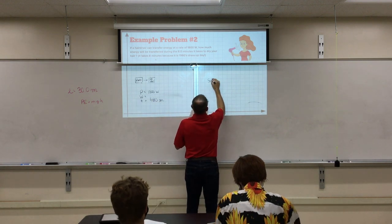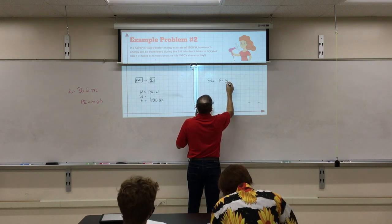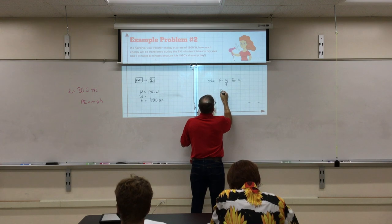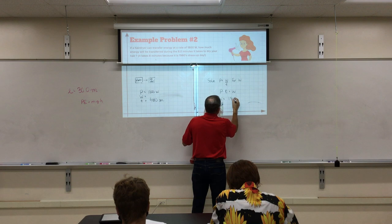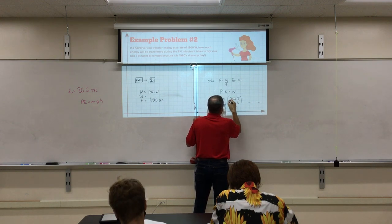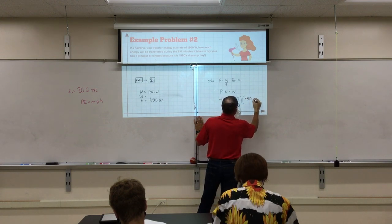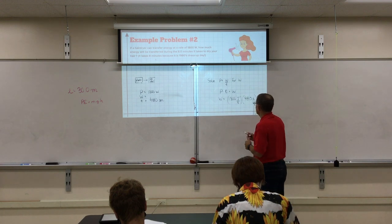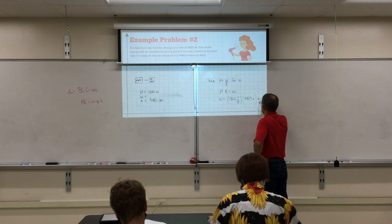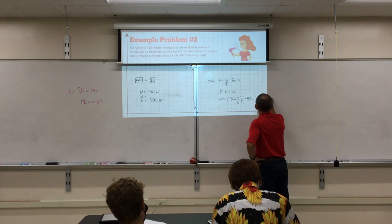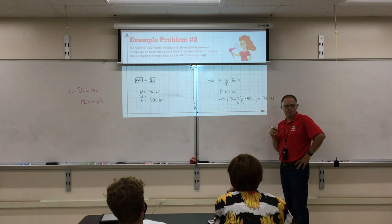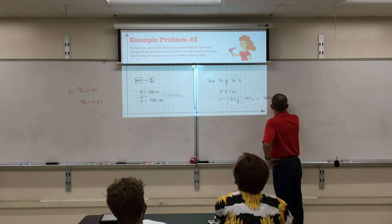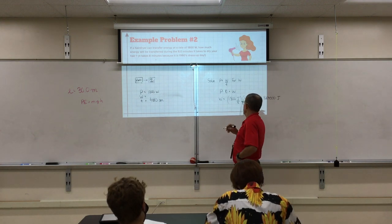So we are going to solve the power equals the work divided by the time for W. So how do we get W by itself? Multiply both sides by T. So power times time is the work. So the work will equal 1800 watts, which is joules per second, times 480 seconds. And that gives you some number. Help me there, Josh. 1800 times 480. 864,000. Is that what you said? Yeah. What units would that be? See, since a watt is a joule per second, and we multiply it by seconds, the seconds cancel and we are left with? Joules. Which is a unit of energy. So it worked out, right? Our units check our work. Alright. So there is the answer.